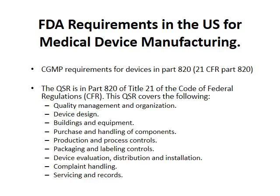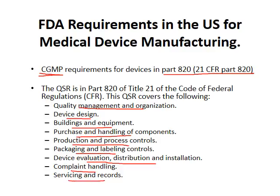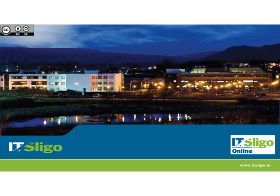In the US, the quality system is called Current Good Manufacturing Practice, or cGMP. The requirements are in Part 820 of 21 CFR. This covers quality management, organization, device design, buildings, equipment, purchasing and handling, production and processing controls, packaging and labeling, device evaluation, distribution and installation, complaint handling, servicing, and records requirements. Part 820 is where a company finds all the information needed to set up a manufacturing facility, train staff, document things, and handle complaints.